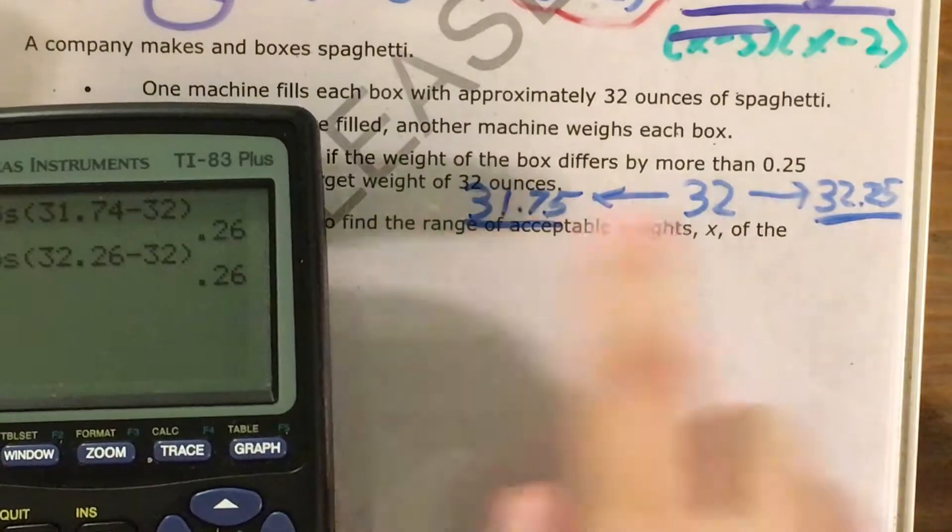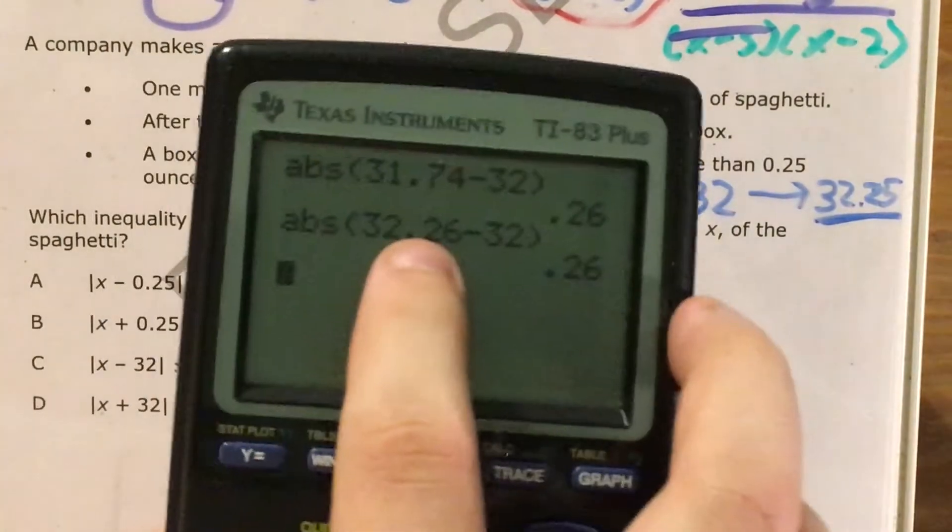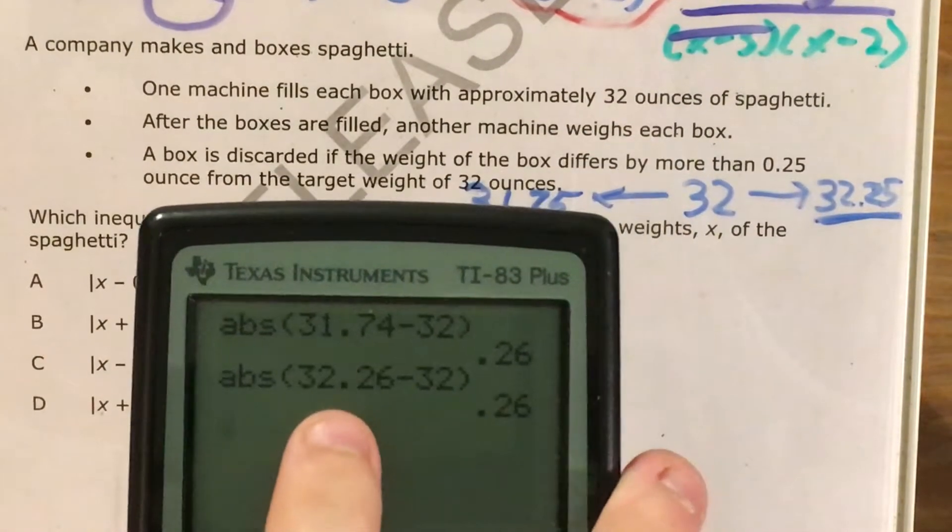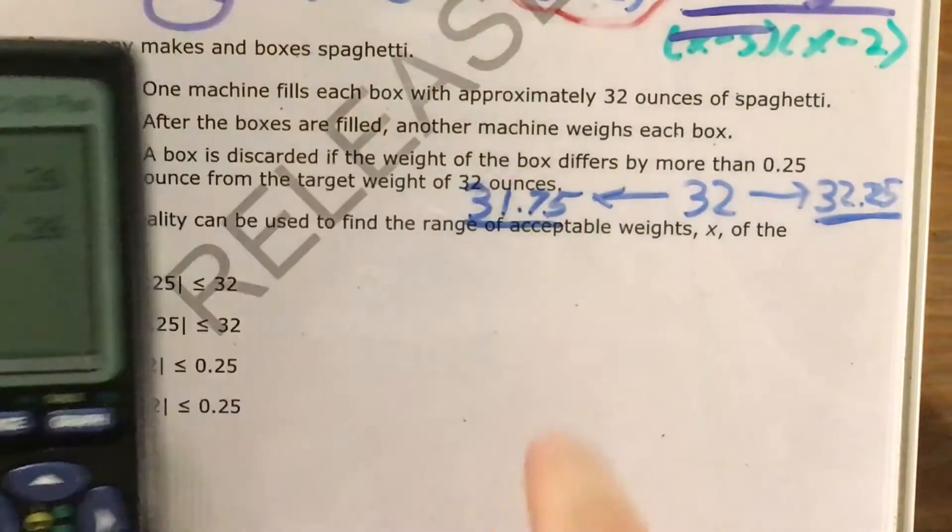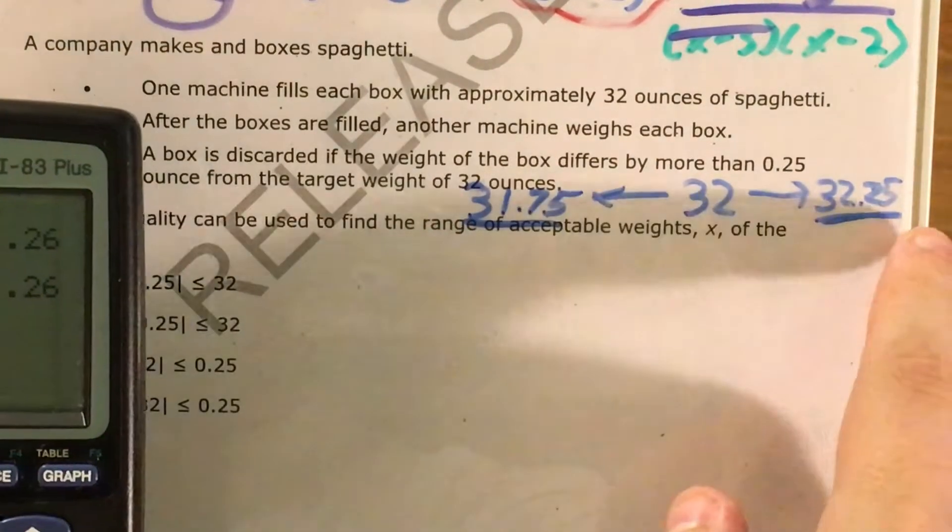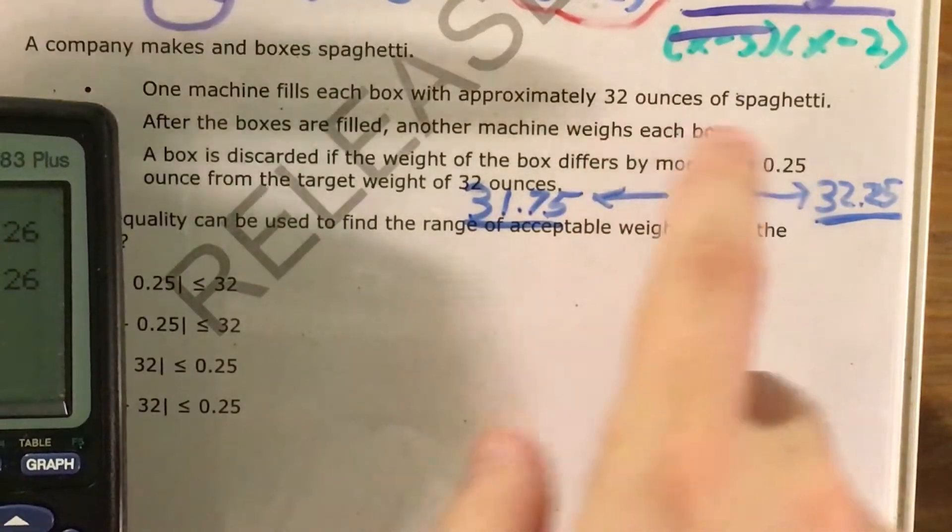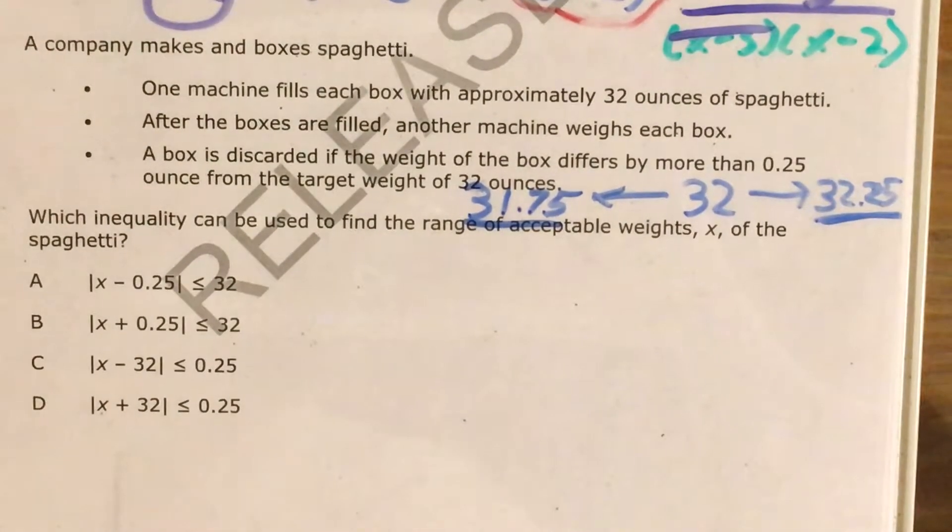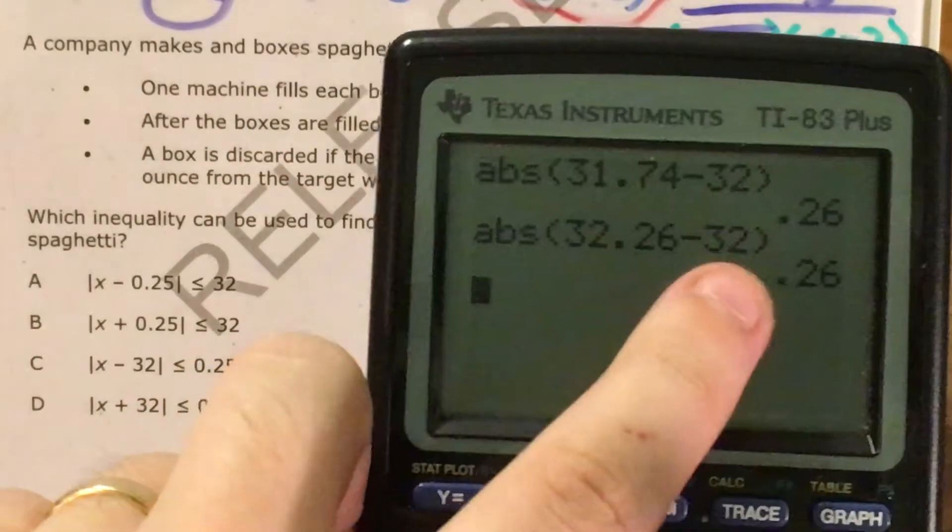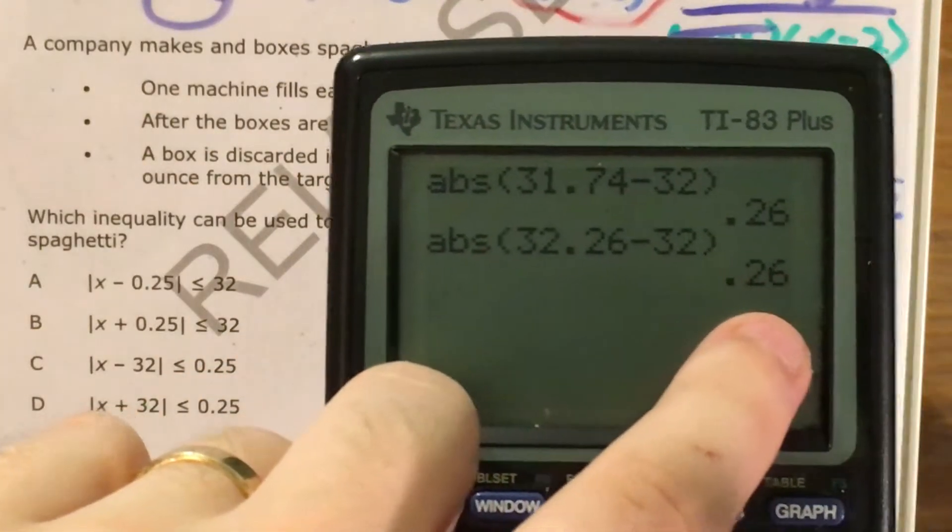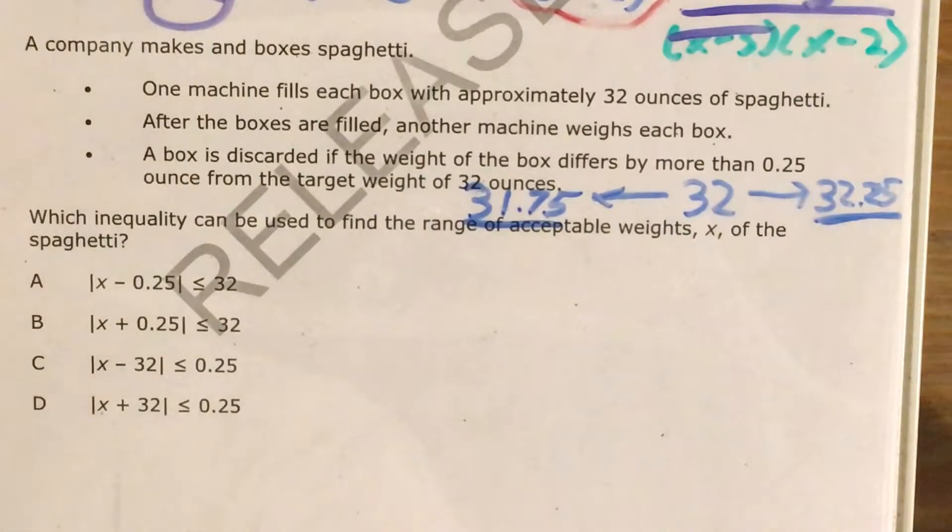So just below this, just above this, I test that by finding the absolute value of the difference between that and 32, and I can see that just below the lower bound and just above the upper bound, I'm actually differing by more than a quarter of an ounce. So I've found a good range, and I've found a good expression. The absolute value of x minus 32 has to be less than or equal to a quarter of an ounce.